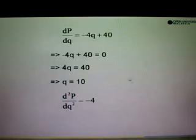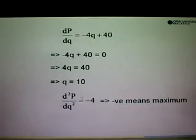Now we need to prove that this is a maximum. So what we need to do is to differentiate dp dq. So differentiate negative 4q will give us negative 4. Now since this is a negative, so negative means maximum.